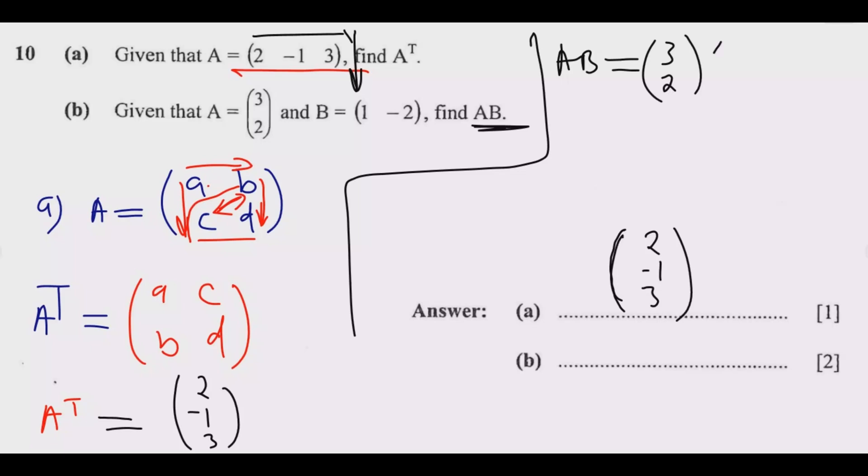If you notice, A has two rows and one column. Then B is one row multiplied by two columns. So A is 2 by 1, and B is 1 by 2.